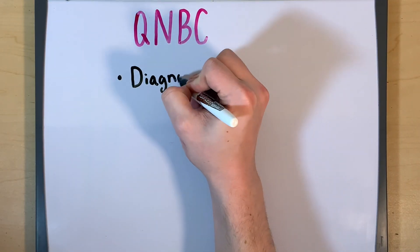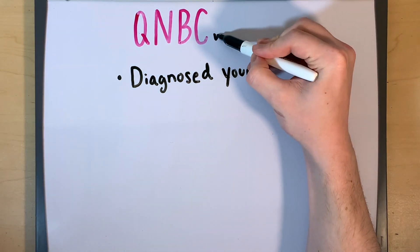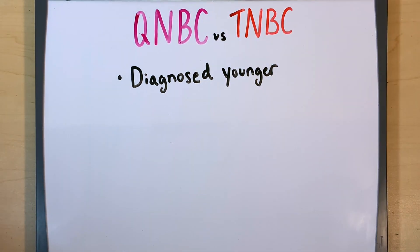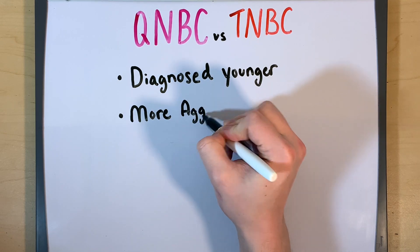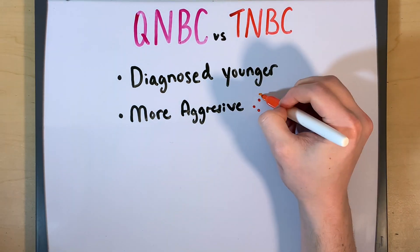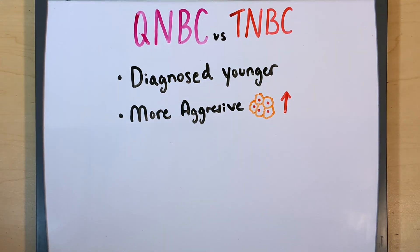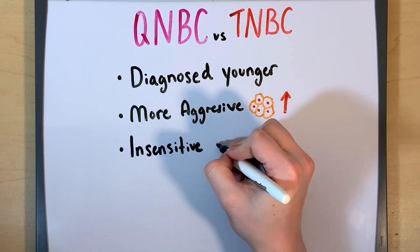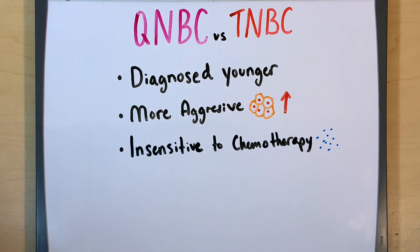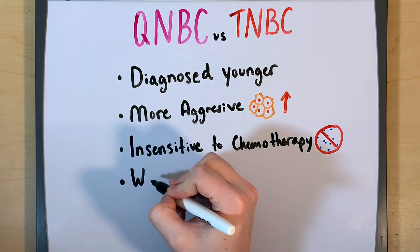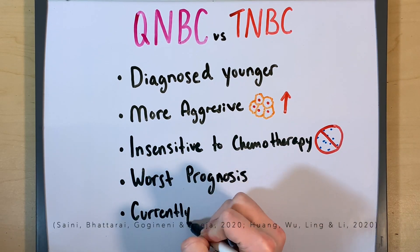When compared to triple negative breast cancer, quadruple negative breast cancer is diagnosed at an even younger age and presents as a more aggressive type of cancer. It is also insensitive to typical chemotherapy treatments, resulting in the worst prognosis. There is currently no effective treatment for quadruple negative breast cancer.